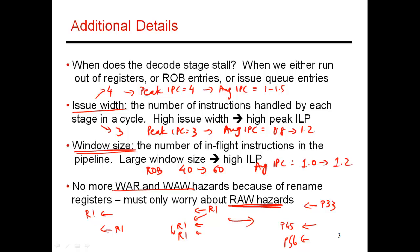Most problems in this out-of-order pipeline can be traced back to read-after-write dependencies where it's taking a long time to produce a result — for example, some fetch from memory. In the next video, we'll look at how to handle branch mispredicts, how to do wake-up at the right time, and how to integrate a load store queue into the design.